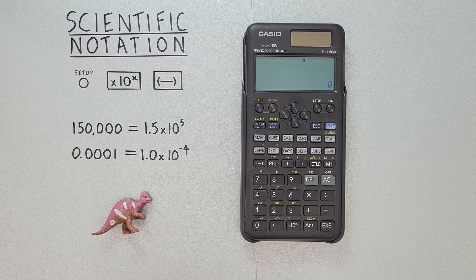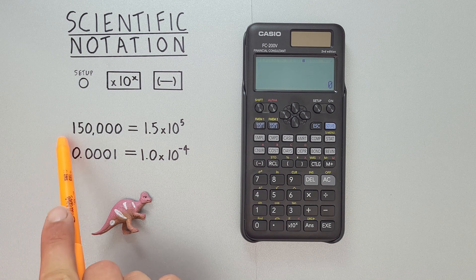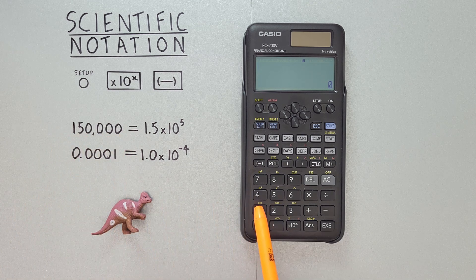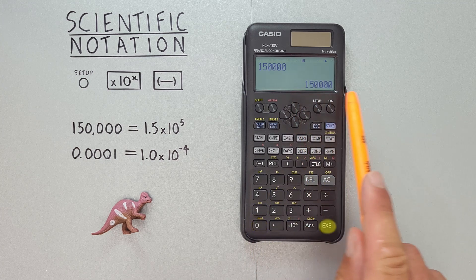Scientific notation is useful for entering either really large or really small numbers on our calculator, because it makes them more easy to work with. Normally, when we enter a large number on our calculator, like say 150,000, it displays like this.